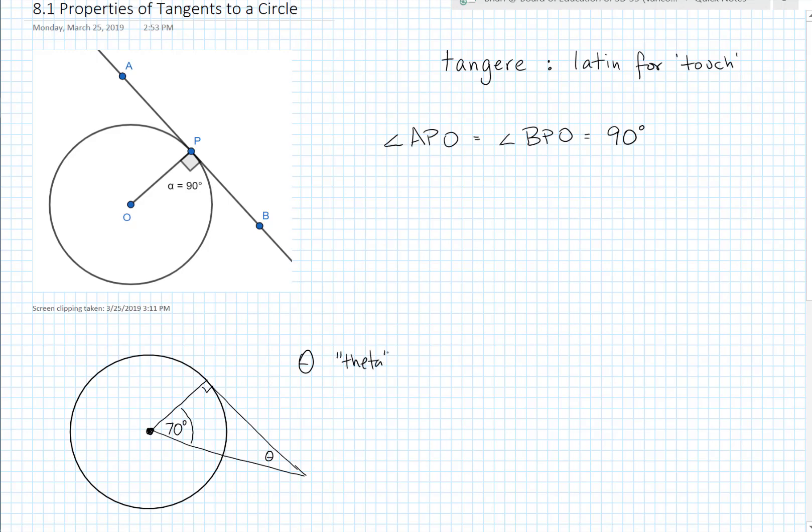So this Greek letter here is pronounced theta. And Greek letters are often used as variables for angles. They don't have to be. We could just as easily have used x or y or z. But I thought I would get you used to seeing some Greek letters. So how do we find theta?